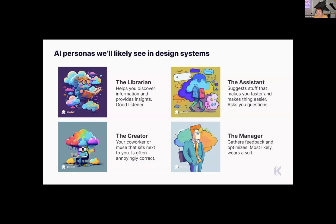First, you have the Librarian — this is about discovery of insights, it's a very good listener, usually taking the form of a chatbot. Then there's the Assistant — all about suggestion interfaces, things like autocomplete in Gmail or smart suggestions that happen as you work, transparent UIs that provide clear point-in-time value. Then there's the Creator — the person in a chair helping you actually build the thing, very similar to Copilot.